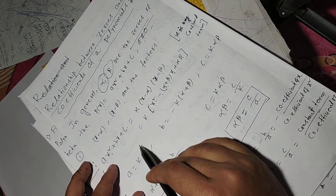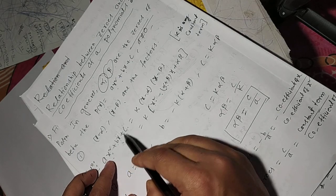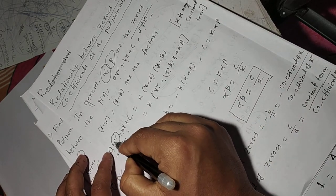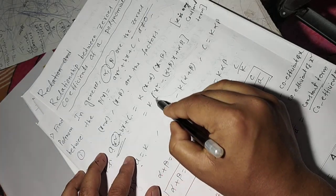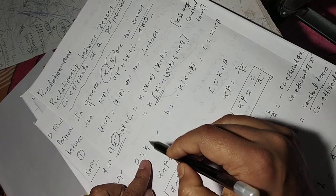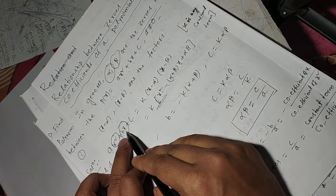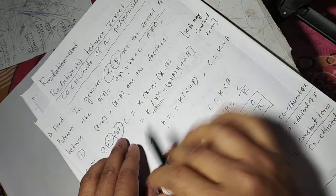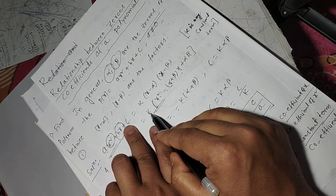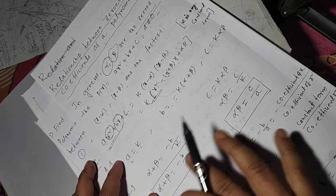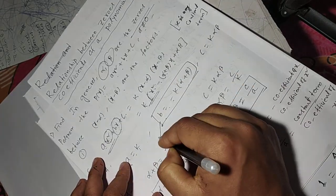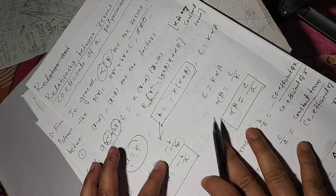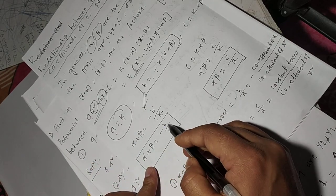Now comparing the coefficients of x squared, x, and constant term on both sides. The coefficient of x squared gives a equals k. The coefficient of x gives b equals minus k times alpha plus beta. The constant term gives c equals k times alpha beta. So alpha plus beta equals minus b by k, and since k equals a, alpha plus beta equals minus b by a.